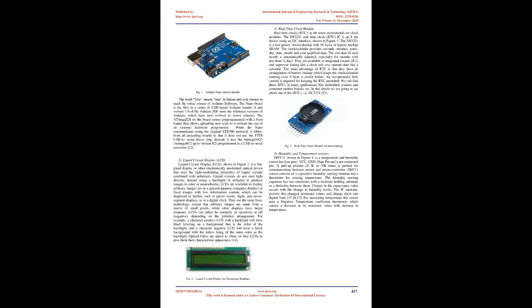2. Liquid Crystal Display (LCD): An LCD is a flat panel display or electronically modulated optical device that uses the light-modulating properties of liquid crystals combined with polarizers. Liquid crystals do not emit light directly; instead they use a backlight or reflector to produce images in color or monochrome. LCDs are available to display arbitrary images, as in a general purpose computer display, or fixed images with low information content such as preset words, digits, and seven-segment displays, as in a digital clock. LCDs can either be normally on (positive) or off (negative) depending on the polarizer arrangement. Optical filters are added to white-on-blue LCDs to give them their characteristic appearance.